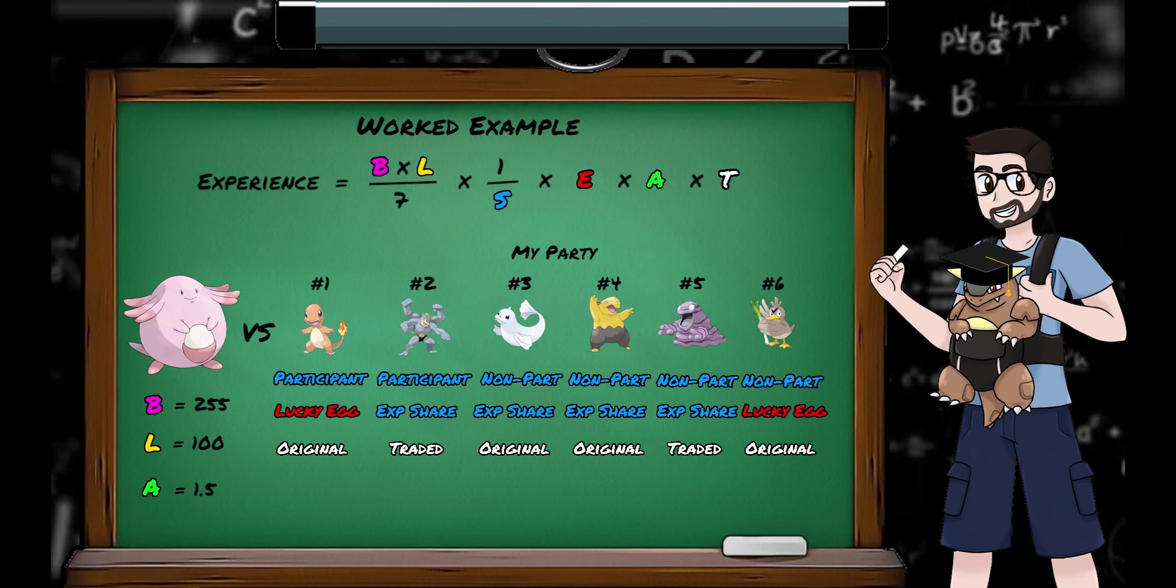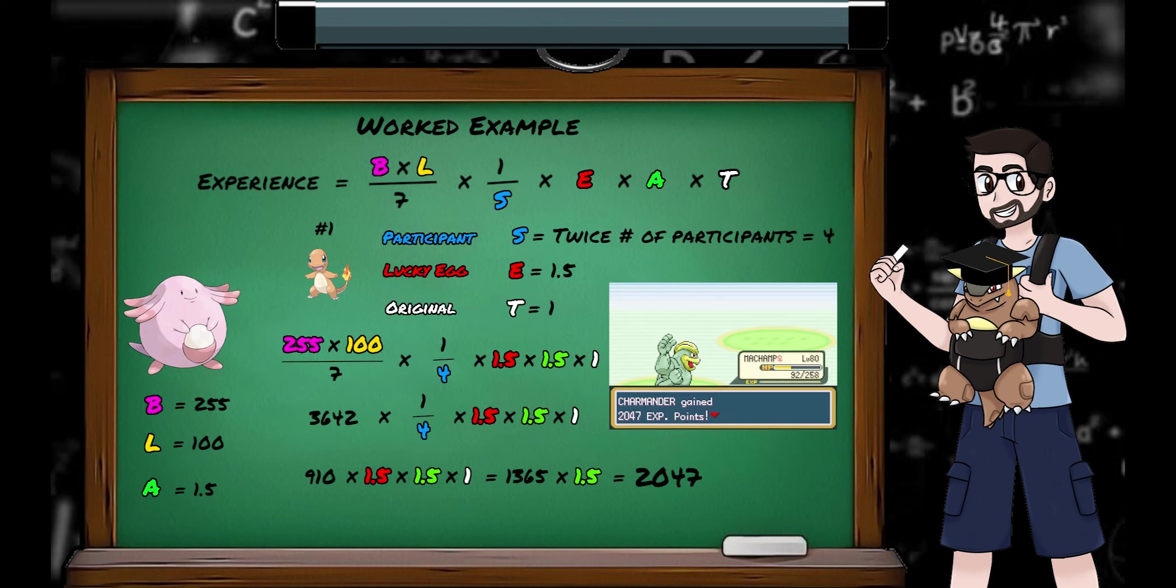As we're in Generation 3, we'll be using the Generation 3 equation, and the appropriate values for S. Starting with Charmander, we have Chansey's base yield of 255 multiplied by its level 100, divided by 7, which gives us 3642, rounded down.